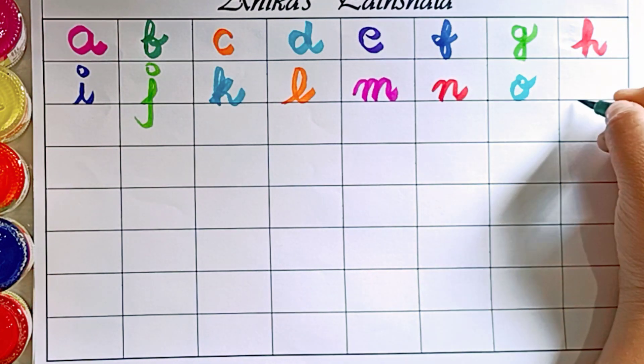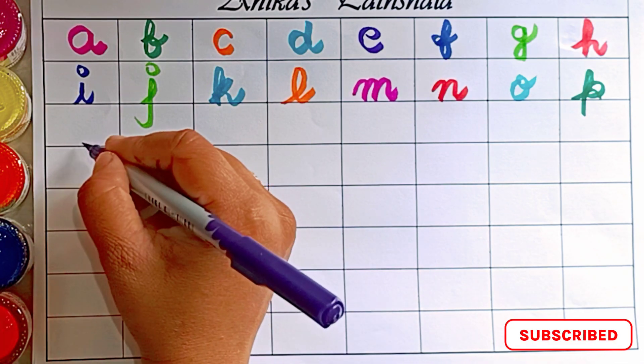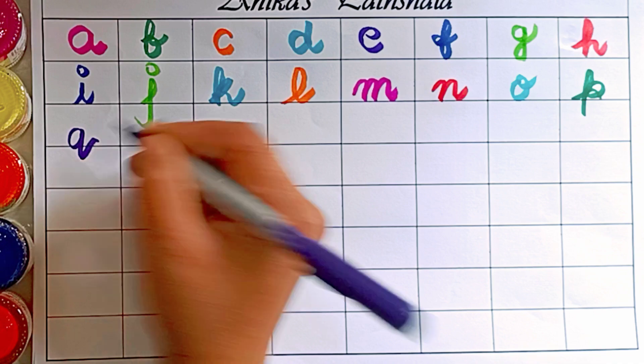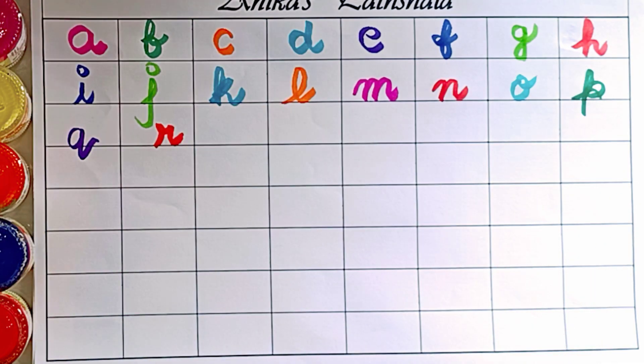P. P is for parrot. Q. Q is for quill. R. R is for red.